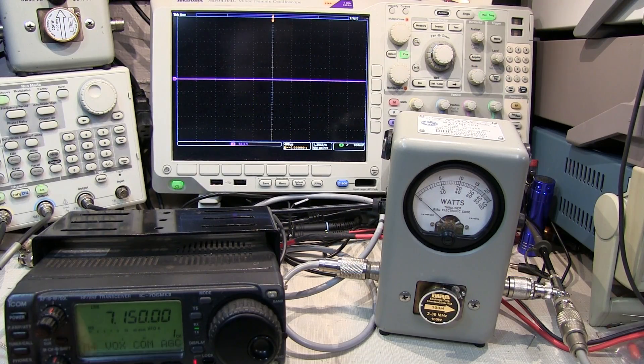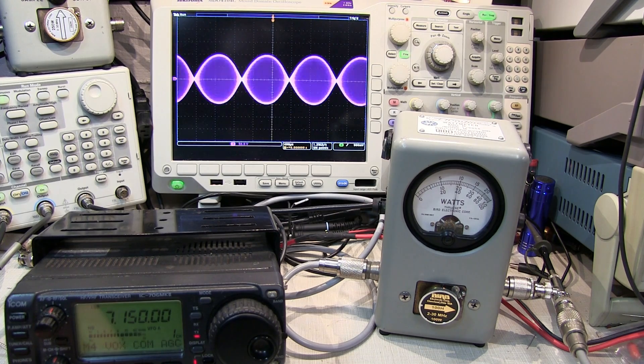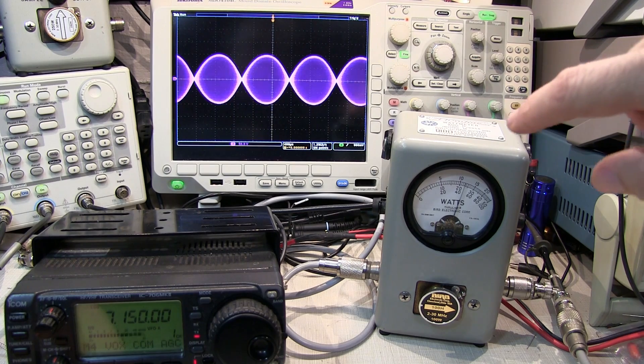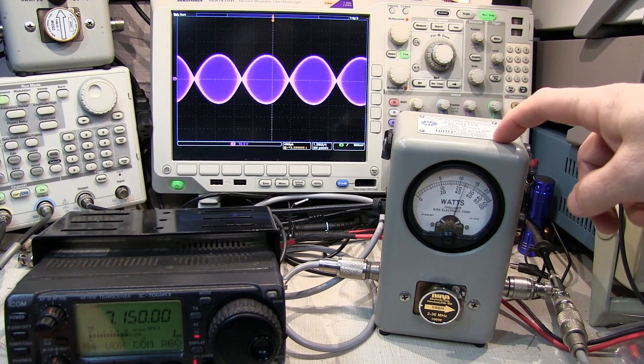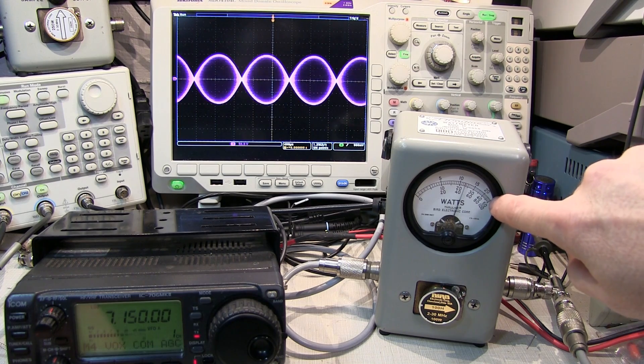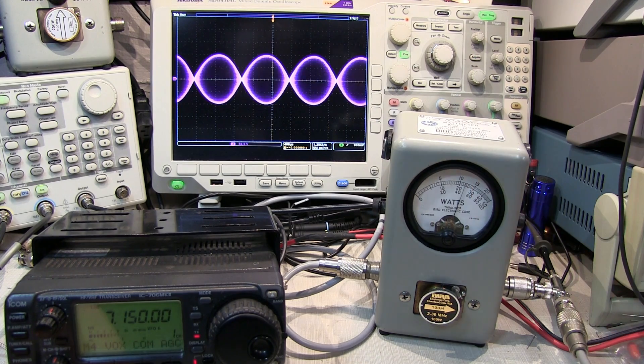Now with the generator set for my two-tone input, I key the microphone, I can actually see the expected two-tone single sideband RF envelope. And the RF power as expected is now reading half of what we were seeing before. We were seeing about 90 watts. Now we're seeing about 45 watts.